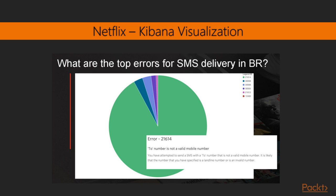During analysis, they came to know that the users were using an invalid phone number. This was unusual because nearly 30% of customers could not provide an invalid phone number, and they wanted to know what was actually happening in Brazil. The first theory was that customers were using landline numbers, but that was later dismissed.